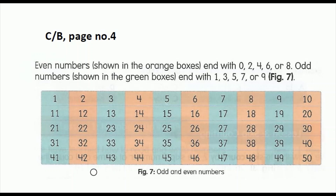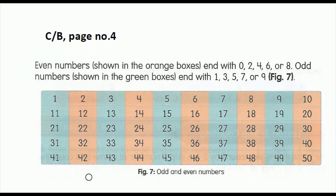So in this picture, the numbers in the orange box end with even numbers — so all the numbers in the orange box are even numbers. And in the green box they end with odd numbers, so all the numbers in the green box are odd numbers.